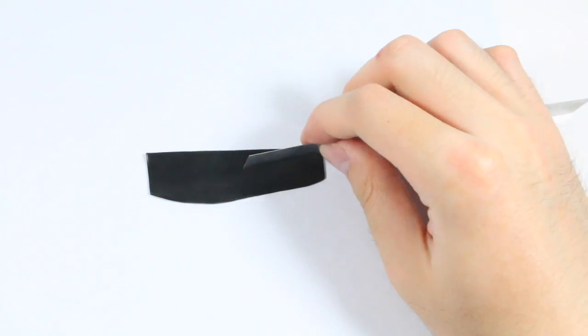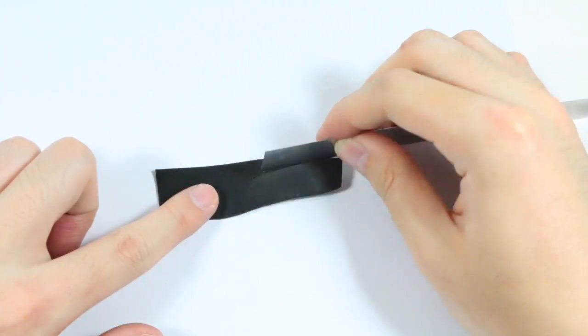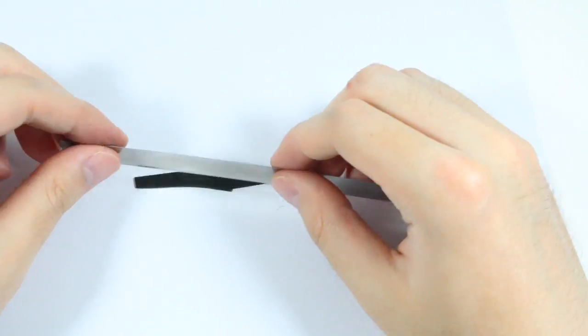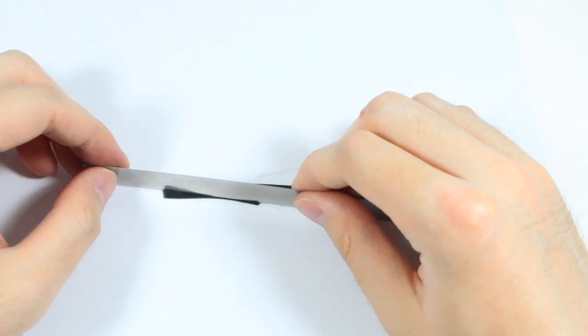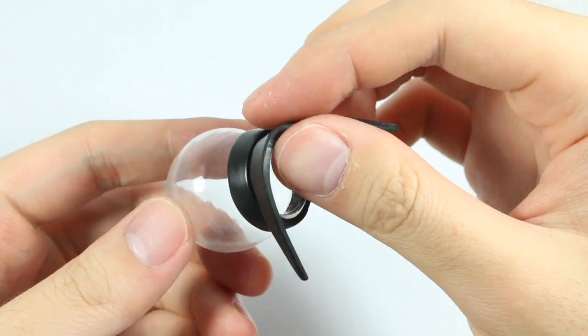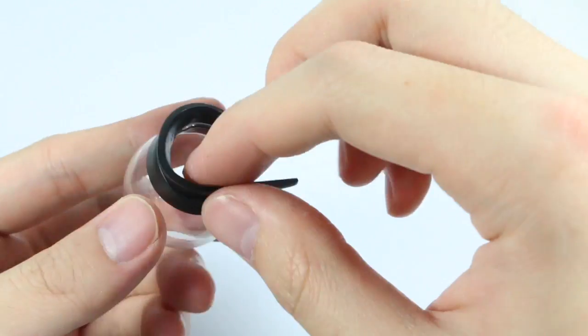Then to make the spout you want to get a strip of black clay and you want to cut it into a very long isosceles triangle. And you're gonna make the pointed part where the water actually comes out and wrap it around your rim.